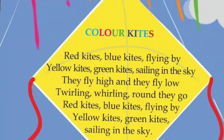Yellow kites, green kites sailing in the sky. They fly high and they fly low, tillering, willering, round they go. Red kites, blue kites flying by, yellow kites, green kites sailing in the sky.